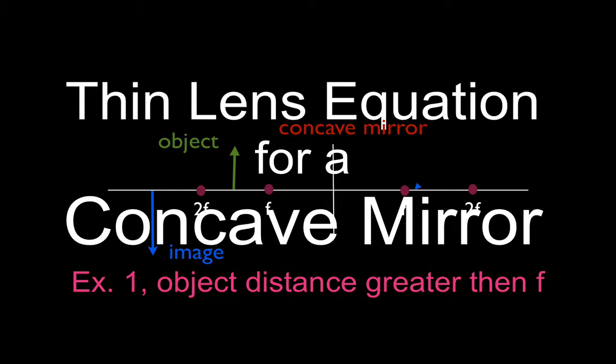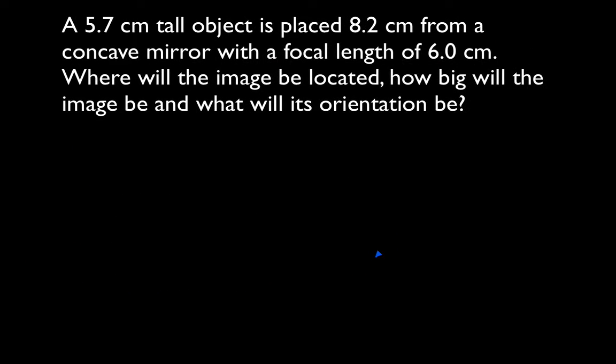In today's video I'm going to go over how to use the thin lens equation to calculate the image distance, size, orientation, and type for a concave mirror. In this case, the object is going to be more than f away from the mirror. Here's our problem.